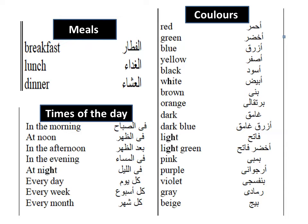Meals: Breakfast, Lunch, Dinner. Times of the Day: In the morning, At noon, In the afternoon, In the evening, At night. Every day, Every week, Every month. Colors: Red, Green, Blue, Yellow, Black, White, Brown, Orange, Dark, Dark Blue, Light.